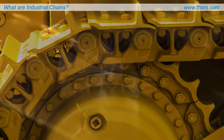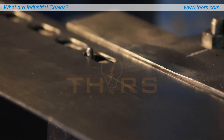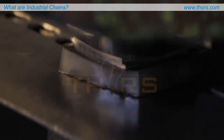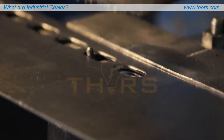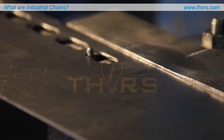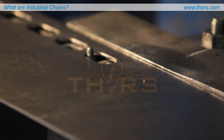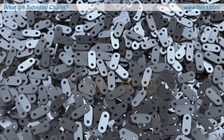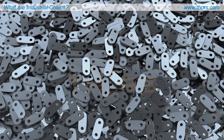Other chains are assembled using stamped sidebars, in which metal strips are fed through a stamping press and the chain components are shaped and cut by dies. This method is typical for smaller chains with flat shapes.